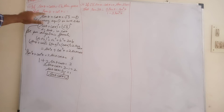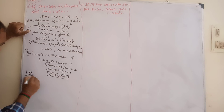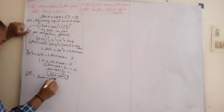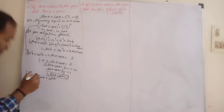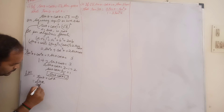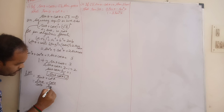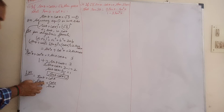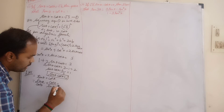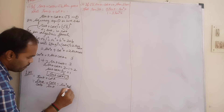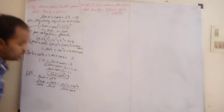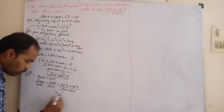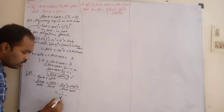Now we prove tan θ + cot θ = 1. Taking the left-hand side, tan θ + cot θ = sin θ/cos θ + cos θ/sin θ. Cross multiplying: (sin²θ + cos²θ) / (sin θ·cos θ). sin²θ + cos²θ = 1 and sin θ·cos θ = 1, so this equals 1/1 = 1.